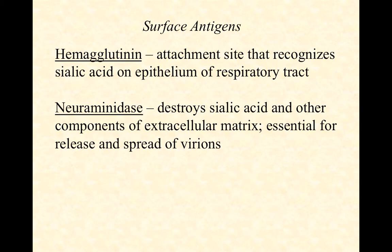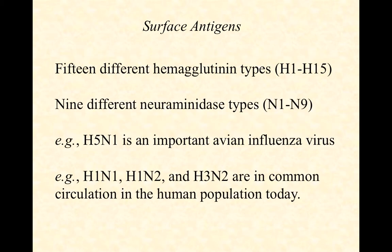Both hemagglutinin and neuraminidase are typically what tips off our immune system to an influenza infection. Currently there are about 15 different hemagglutinin types — slight variations in protein sequence, like a family. There's H1 through H15, and there are nine different known neuraminidases, N1 through N9.